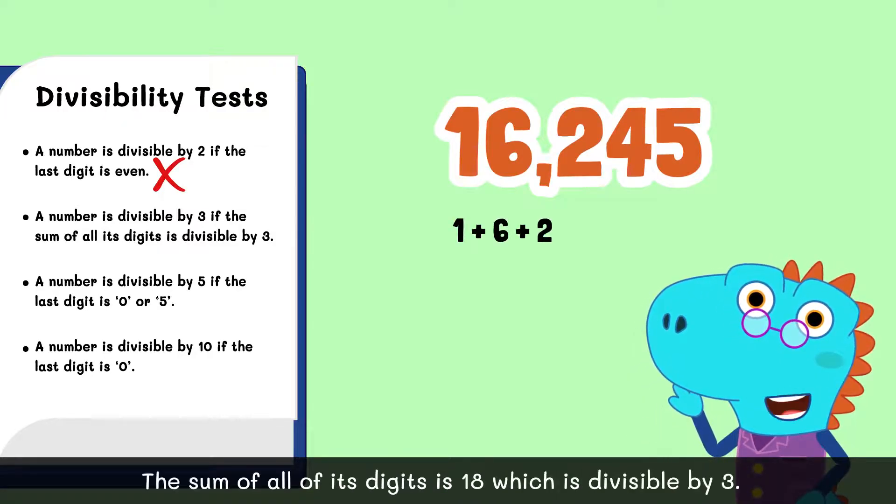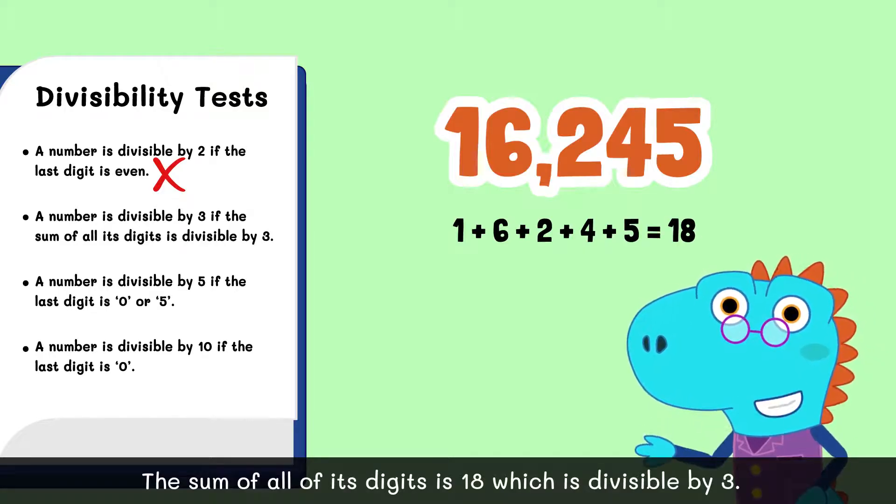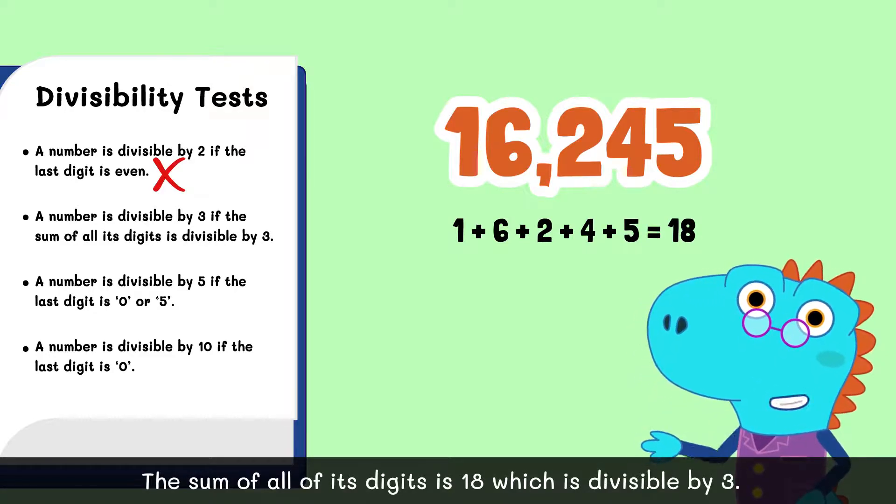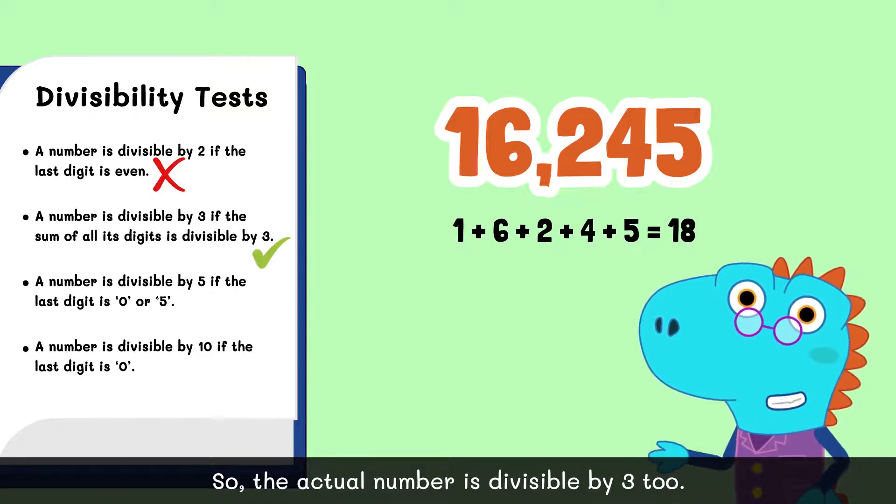The sum of all its digits is 18, which is divisible by 3, so the actual number is divisible by 3 too.